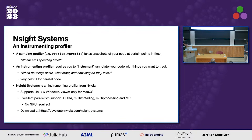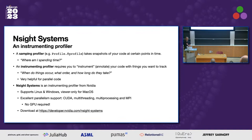Nsight Systems is an instrumenting profiler. A sampling profiler is what we have in Profile.jl, which basically takes snapshots of your code at certain points in time — very convenient, you just call it and it works. It answers the question: where am I spending all my time? An instrumenting profiler requires you to instrument your code, which means you stick annotations in your actual code, but it can answer the more complicated question of what things are happening, when are they happening, in what order, and how long do they take.